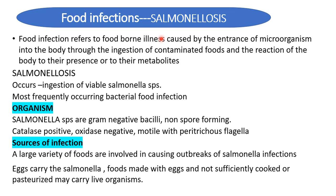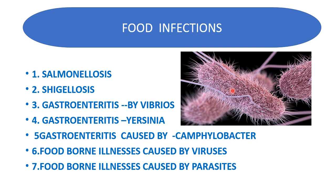Regarding the organism: Salmonella are gram-negative bacilli, non-spore forming, rod-shaped, and able to ferment glucose with gas production. These biochemical characters are essential for identification. Salmonella species are catalase positive, oxidase negative, and generally motile with peritrichous flagella — meaning the flagella are present throughout the entire body surface.